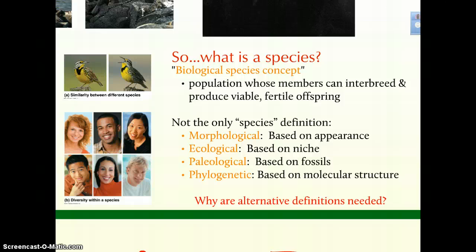The biological species concept says organisms can produce offspring that are viable — they'll survive — and those offspring will be able to reproduce. However, there is a significant shortcoming. Virtually all species that have ever existed — estimates range up to 99% — have gone extinct. We have this extensive fossil record with billions of years of life stored in sediment, but we have no way of knowing if those organisms represented in fossils would have been able to produce viable, fertile offspring. So we have to expand our set of definitions for species.